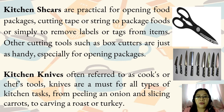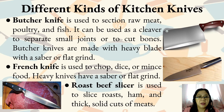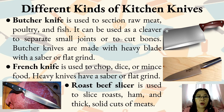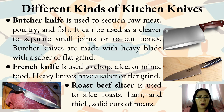Kitchen knives, often referred to as cook's or chef's tools, are a must for all types of kitchen tasks from peeling an onion and slicing carrots to carving a roast or turkey. The first kind is the butcher knife. It is used to section raw meat, poultry, and fish, and can be used as a cleaver to separate small joints or to cut bones. Butcher knives are made with a heavy blade with a sabre or flat rim.